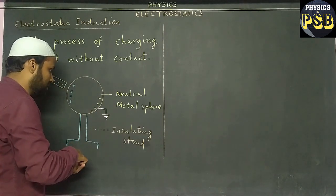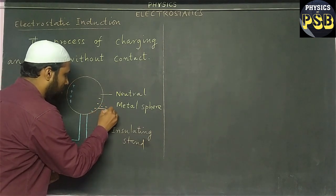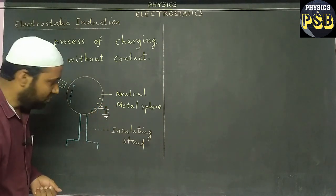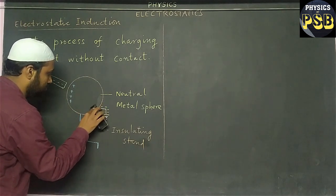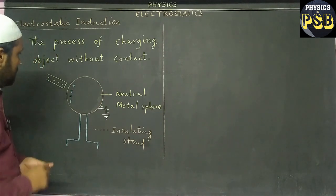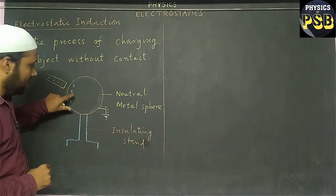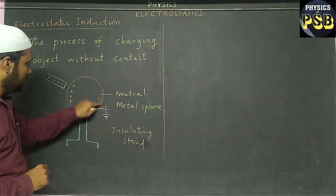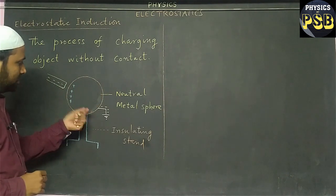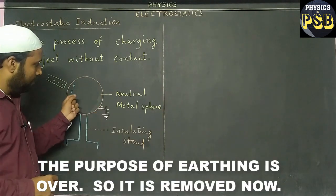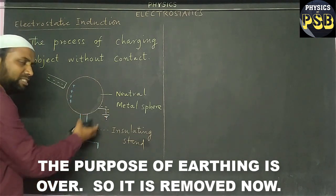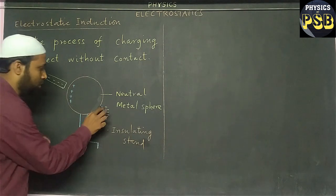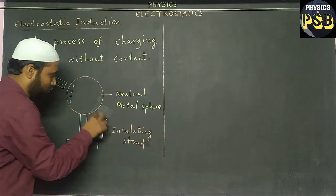These electrons move to the ground by leaving this metal sphere. Now only positive charges are left in the sphere. Once the electrons have moved from the metal sphere, the work of this grounding is over. Now I am going to remove this as well.